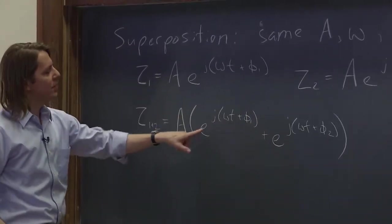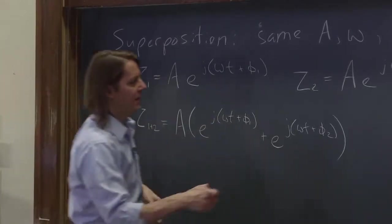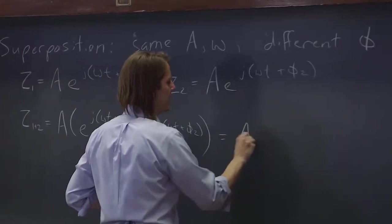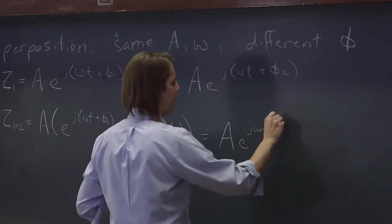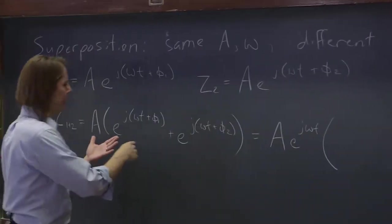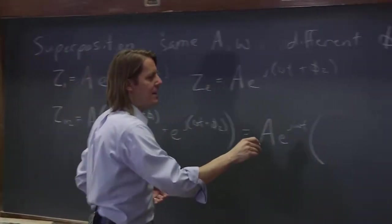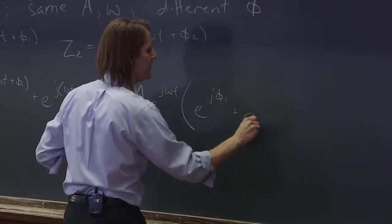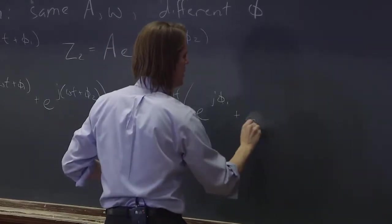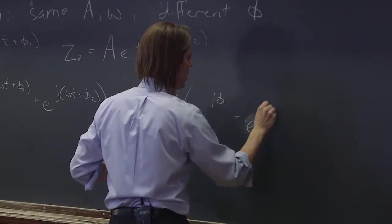So we can actually pull out the oscillating part, e^(jωt). This is actually equal to Ae^(jωt), the oscillating part, times all that's left is the phase part, e^(jφ1) + e^(jφ2).